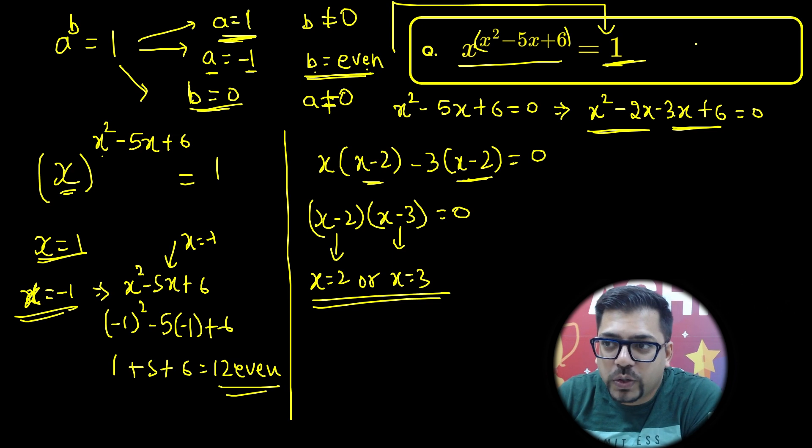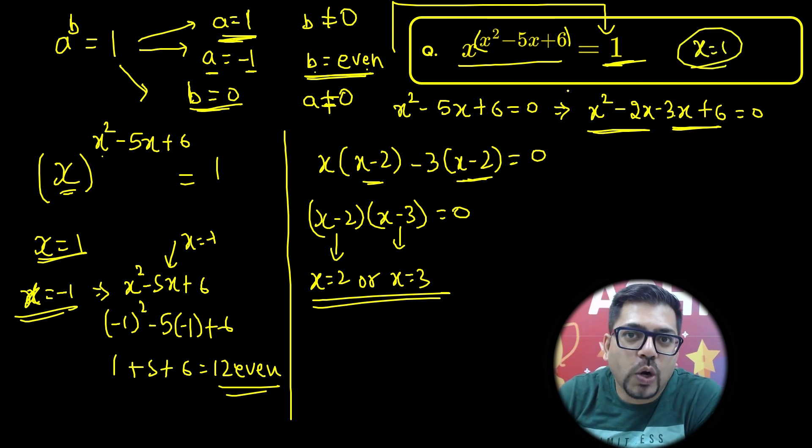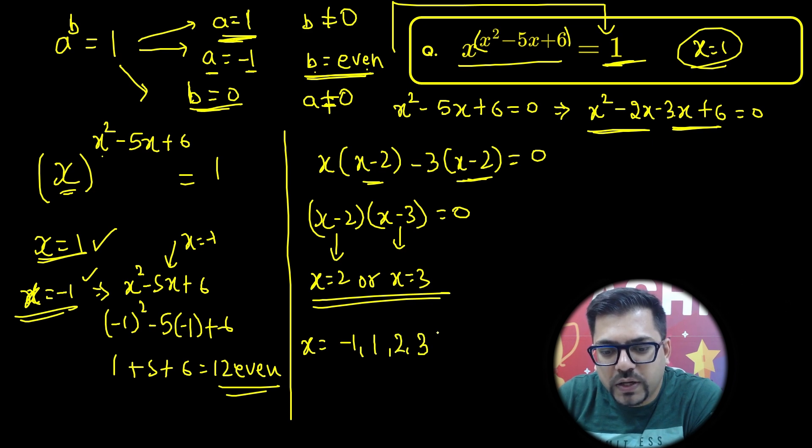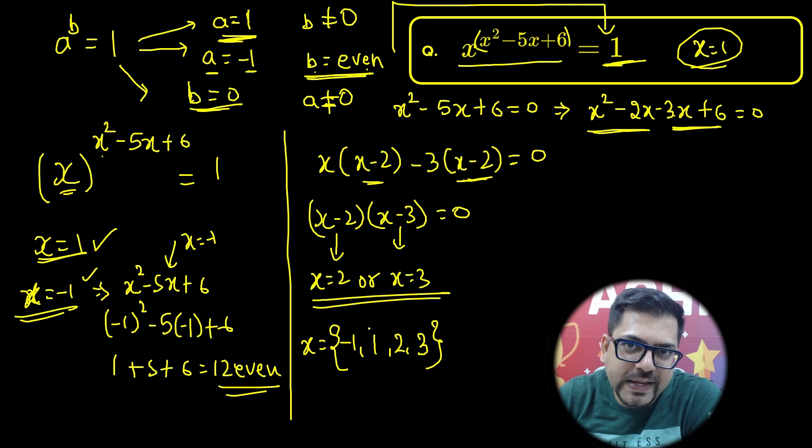Earlier, which was only looking like okay we'll get x equals 1, that's only one solution. But no, we have got all together four solutions: x equals minus 1, then 1, then 2, then 3. So all these solutions are possible for the value of x for which we'll get the output, the right-hand side equals 1.